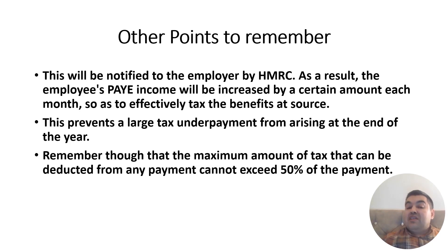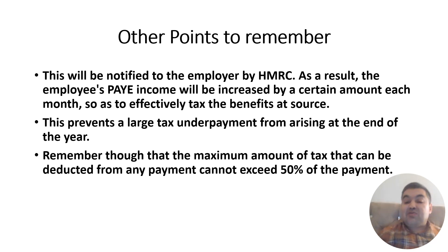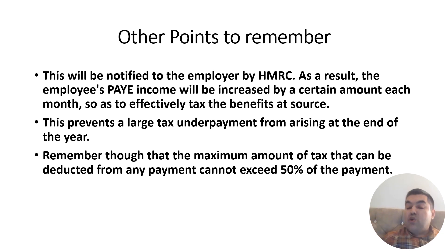This is notified to the employer by HMRC. As a result, the employee's PAYE income is increased by a certain amount each month so that the benefit is effectively taxed at source. This prevents a large tax underpayment — because if the code isn't adjusted, each year there will be an underpayment and after several years HMRC would be asking for a large sum. Therefore, whenever HMRC identifies an underpayment or overpayment, they adjust the tax code. Remember: the maximum amount of tax that can be deducted from any payment cannot exceed 50% of that payment.